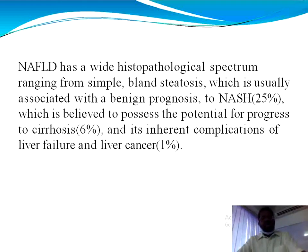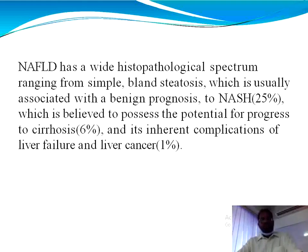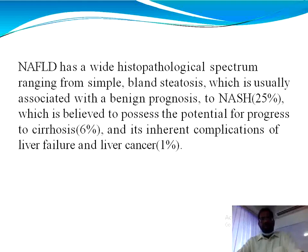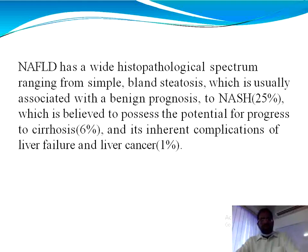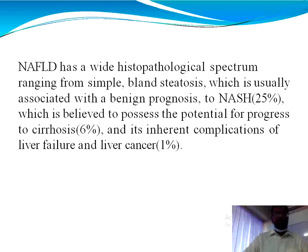Fatty liver disease and NASH are essentially histopathological diagnoses. Histopathological abnormalities range from simple bland steatosis, which is usually associated with a benign prognosis, to fat with liver inflammation and ballooning degeneration — categorized as NASH — which has the potential to progress to marked fibrosis. In about six to ten percent of cases it can end up with cirrhosis, with all its inherent complications of liver failure and development of hepatocellular carcinoma.